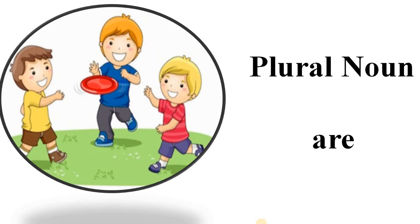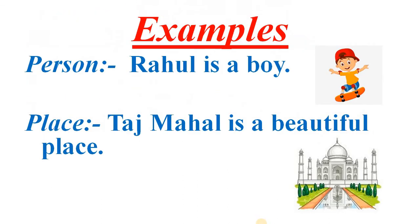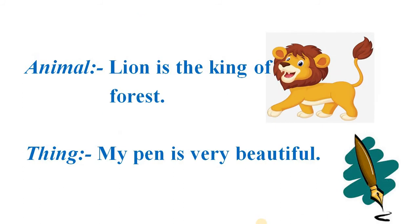Let's see some rules. Rule number one: to talk about one person, place, animal or thing, we use 'is'. For example, for person: Rahul is a boy. For place: Taj Mahal is a beautiful place. For animals: Lion is the king of forest. For things: My pen is very beautiful.